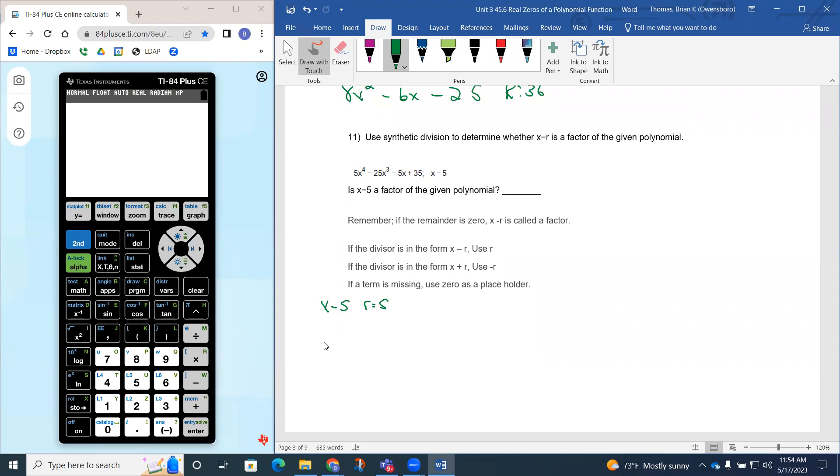Using synthetic division, instead of using this x minus 5, we just put the 5 on the outside. Instead of putting all this 5x⁴ - 25x³ - 5x + 35 on the inside, we just use the coefficients and the constant. But notice the x² term is missing, so we need to use a zero as a placeholder. The 5 is the coefficient of x⁴, the -25 for x³, then zero as a placeholder for the missing x², then -5, then 35.